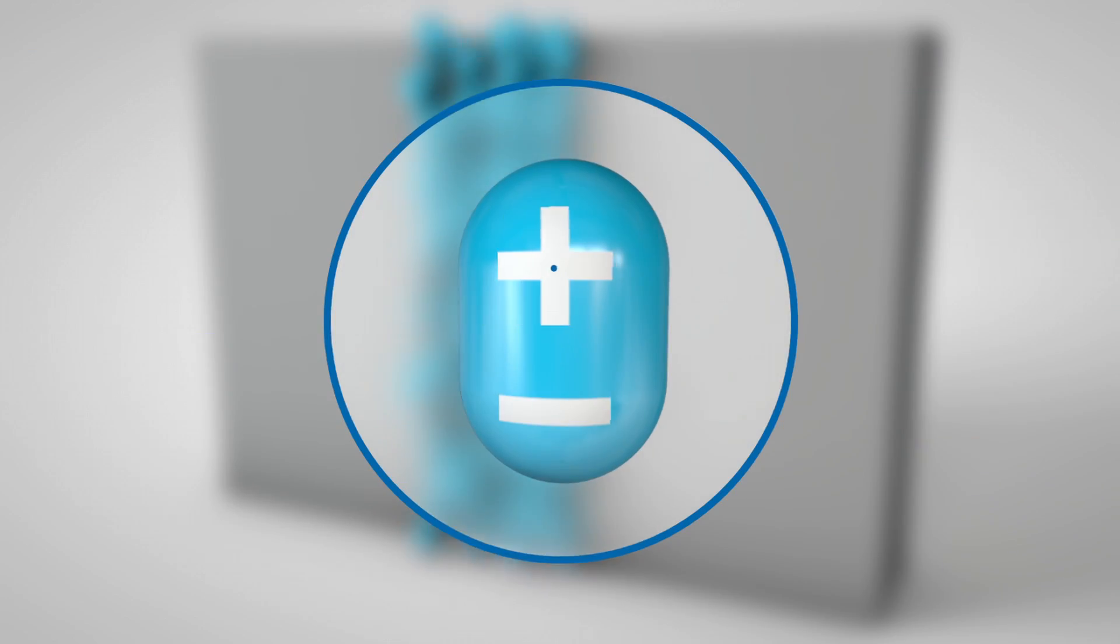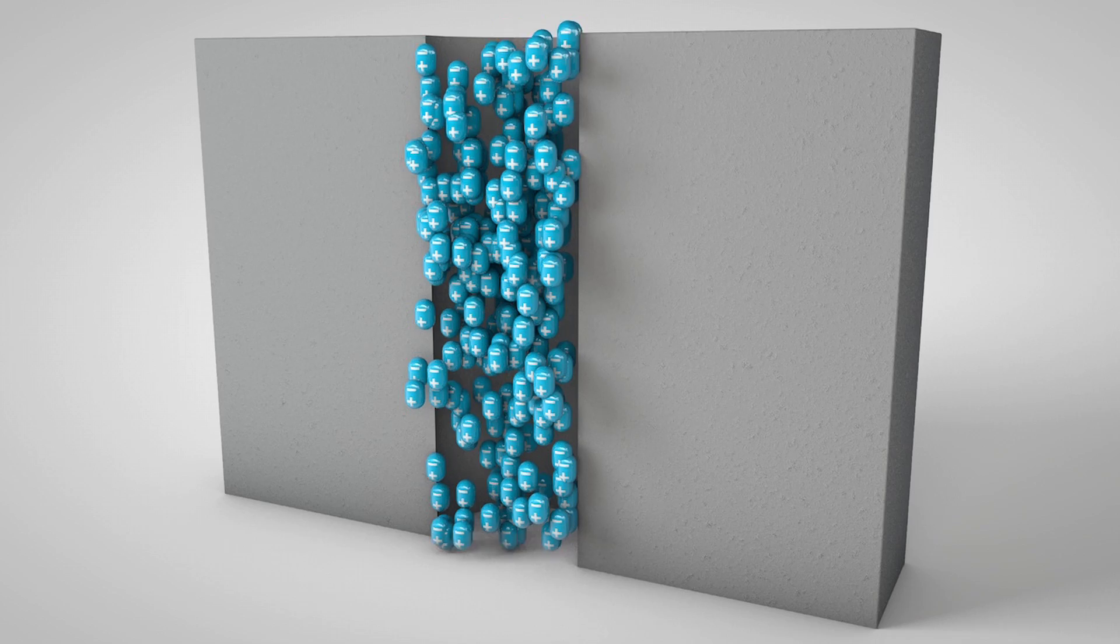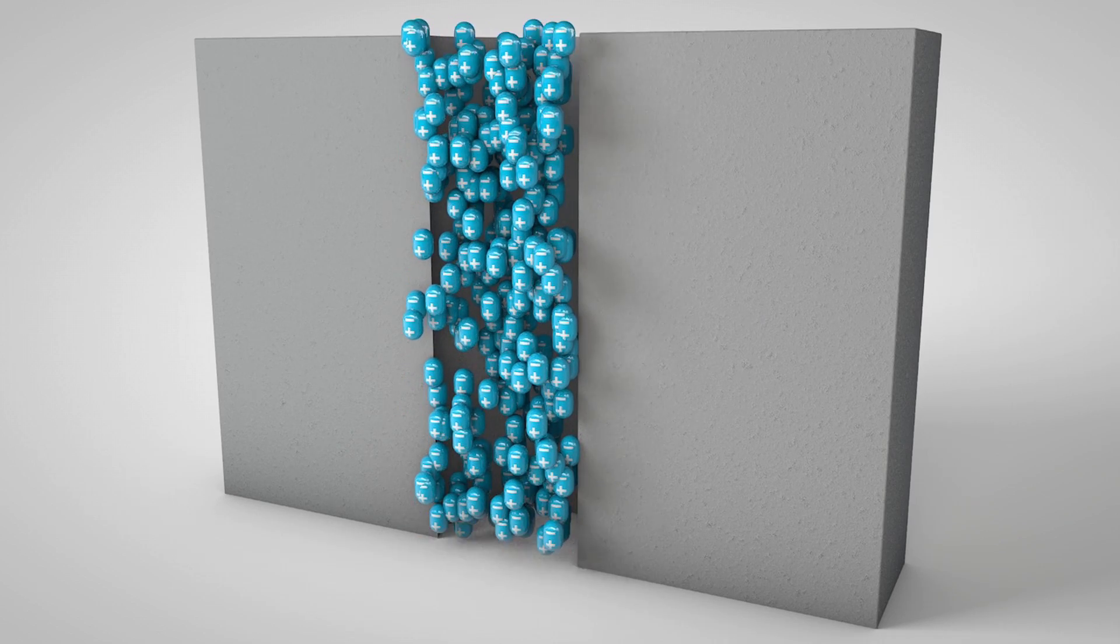Water molecules have a positive and a negative pole, like a small magnet. Water rises by capillarity through the pores of the walls, because the negative poles of the water molecules are oriented upwards.